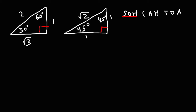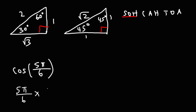Now let's find the exact value of cosine 5π over 6. It helps to convert the angle from radians to degrees by multiplying by 180 over π. Since π equals 180 degrees, the π units will cancel.